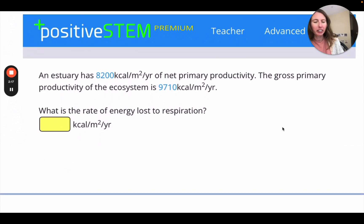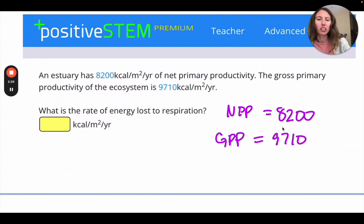So in this problem, an estuary has 8,200 kilocalories per meter squared per year as the net primary productivity. The gross primary productivity, so that's before the loss, is 9,710 kilocalories per square meter per year. What is the rate of energy lost to respiration?